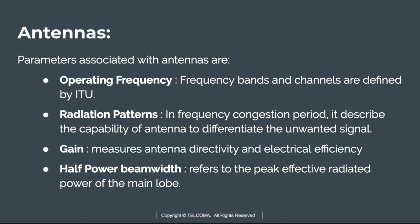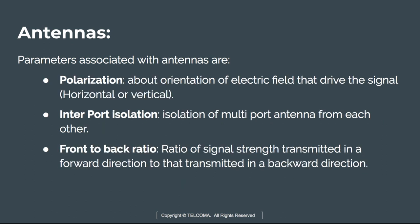The next parameter is the half power beam width (HPBW). HPBW refers to the peak effective radiated power of the main lobe. It is the nominal total width of the main beam at the minus 3 dB point, and it tells us the strongest part of the beam.